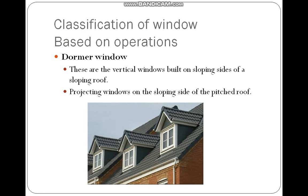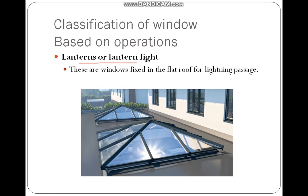The dormer window is similar to the gable window but differs in that it is a vertical window built on the sloping sides of a sloping roof — it is a projecting window. The dormer window projects outward, whereas the gable window does not. Lantern or lantern light windows are fixed in a flat roof for lighting purposes only — not for ventilation or air entry. They are used in offices, hotels, and hostels rather than houses due to privacy considerations.